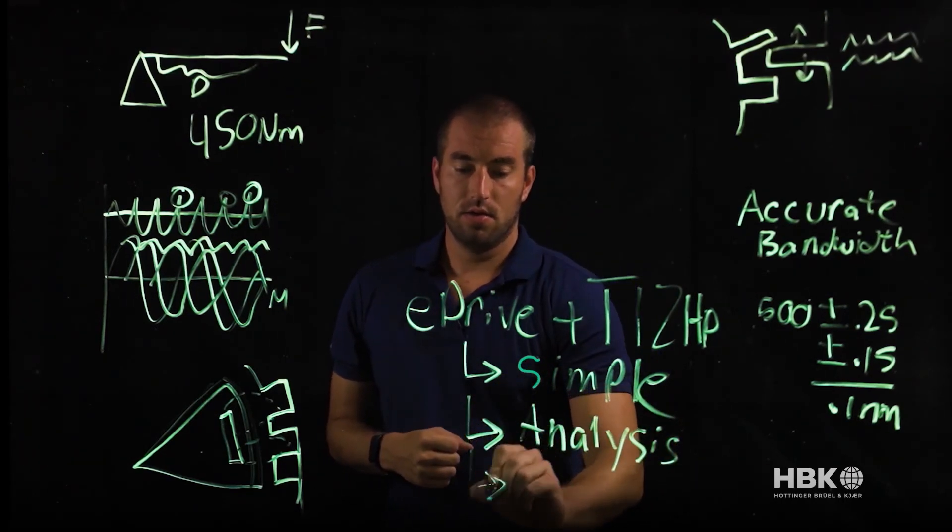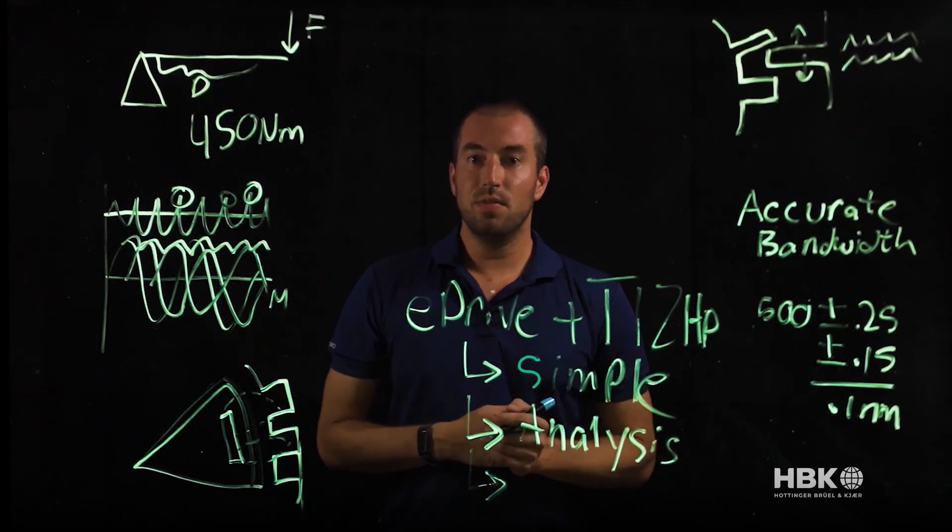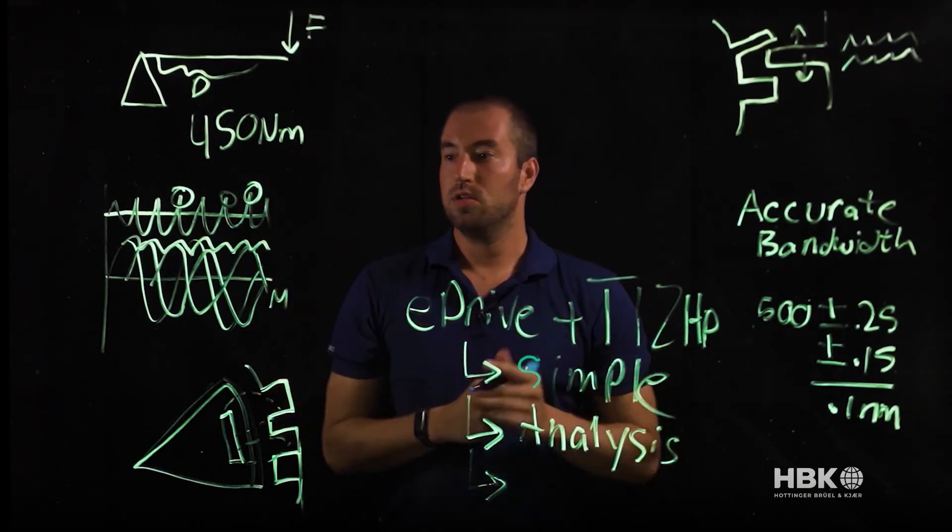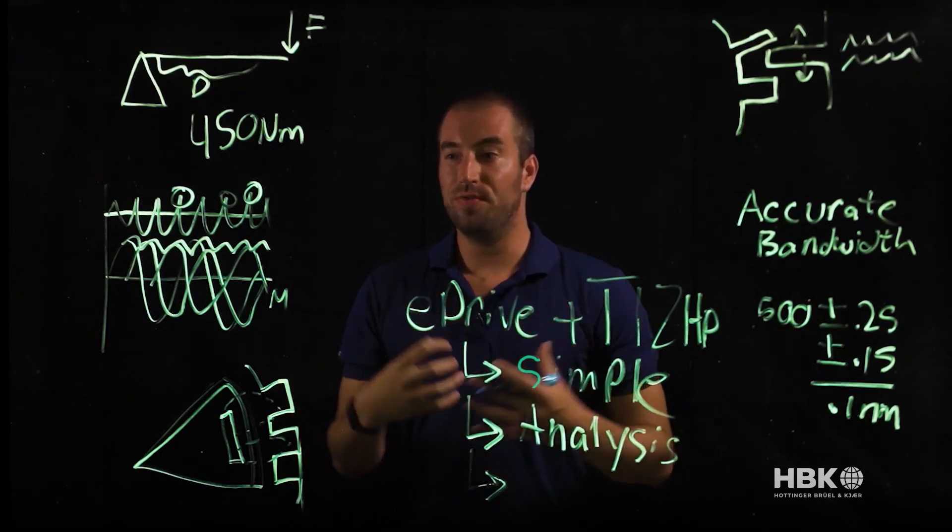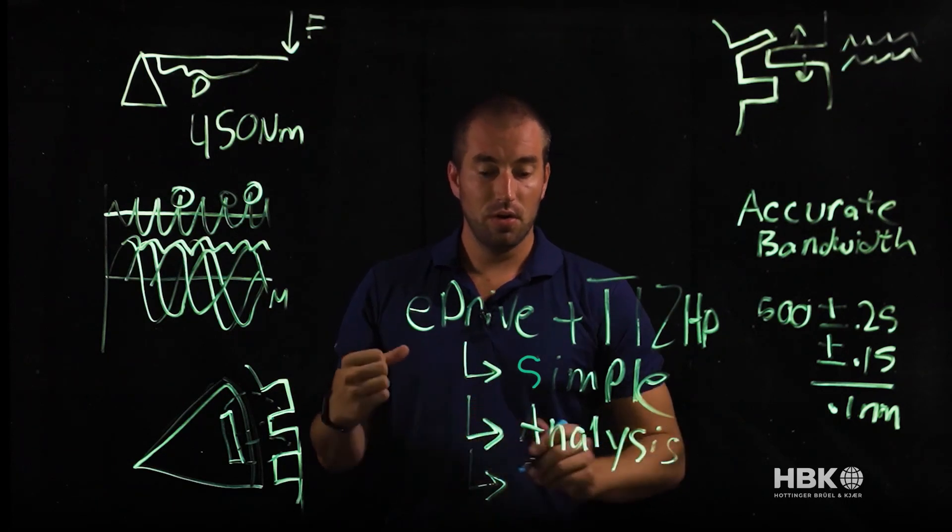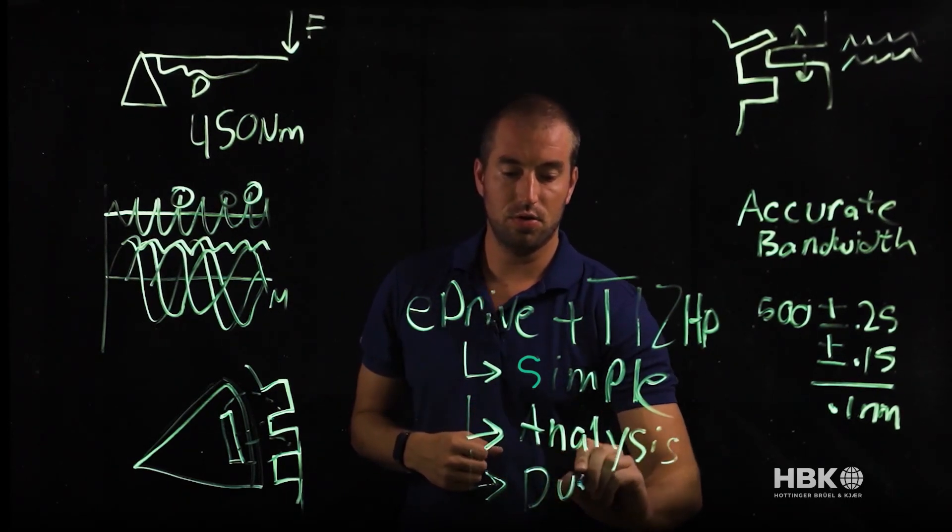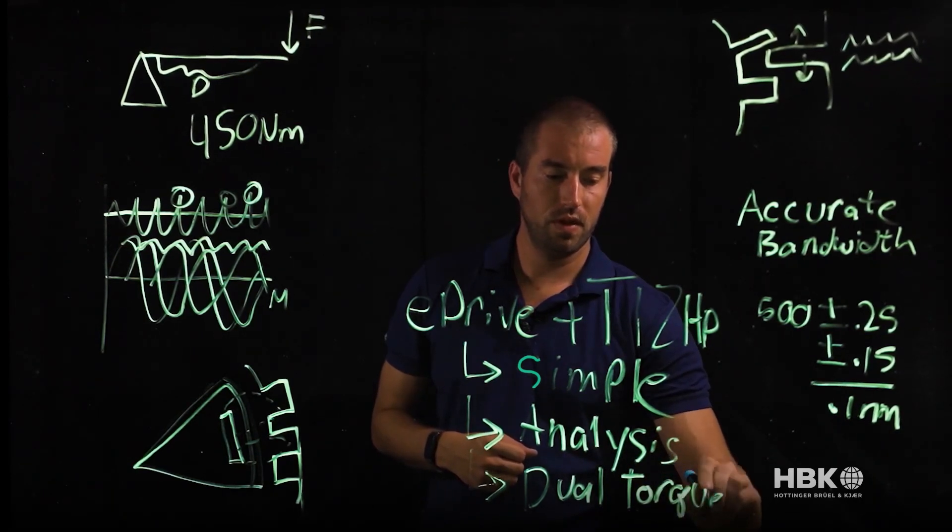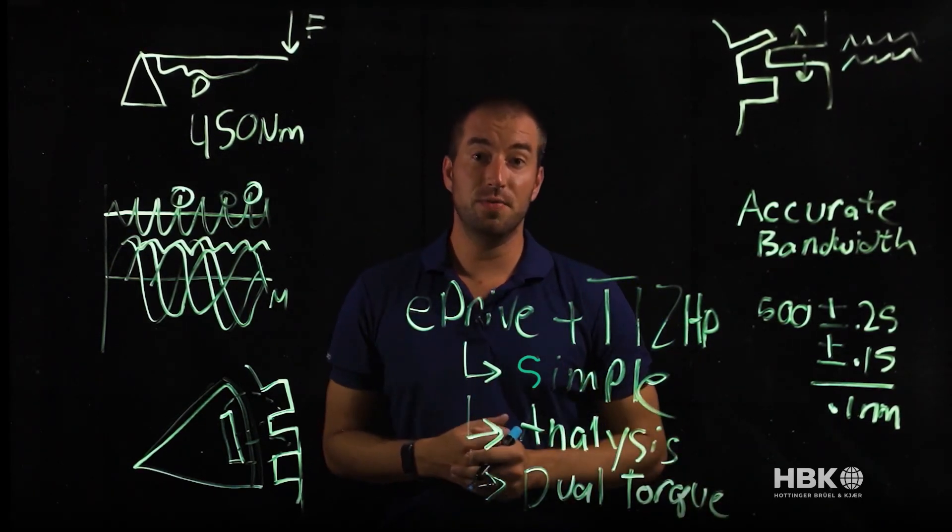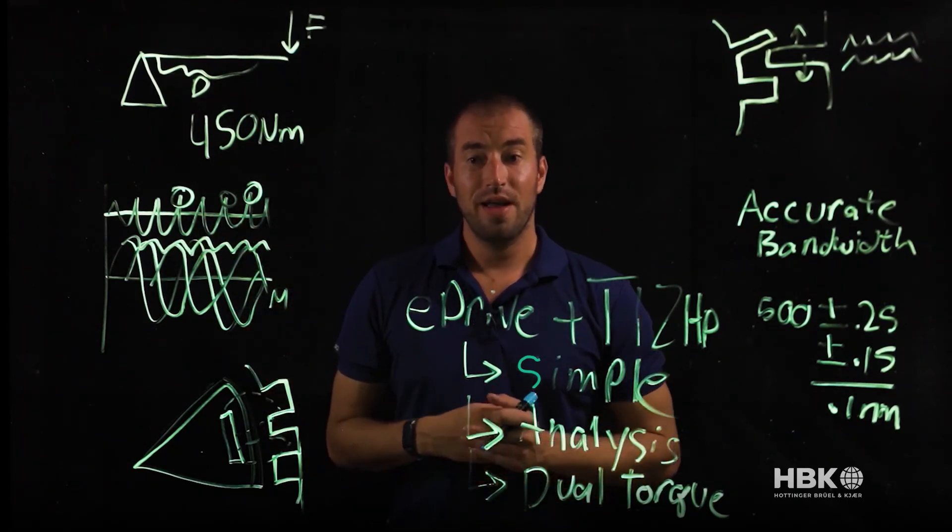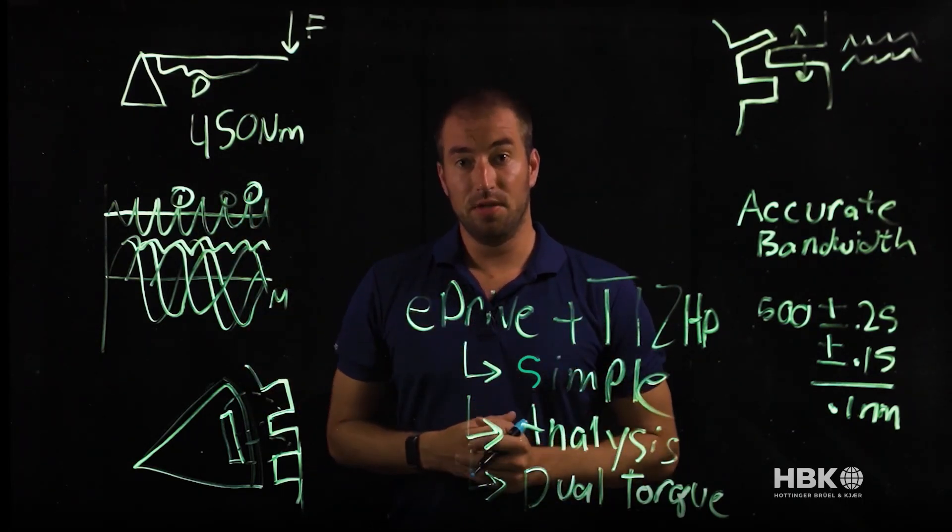Lastly, the eDrive system can record both the steady state torque - that really slow average that we use for efficiency and power - but also the high bandwidth torque, so you can see your torque ripple. We call this dual torque. The ability to have this simple measurement chain with data for analysis and both your slow speed and high speed torque can really accelerate your development time.